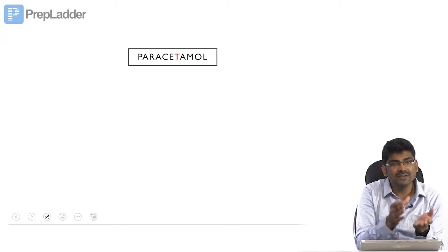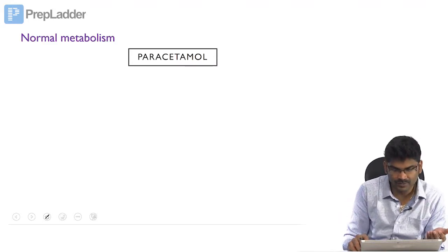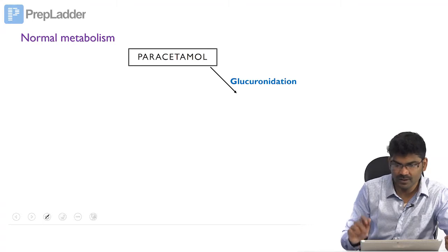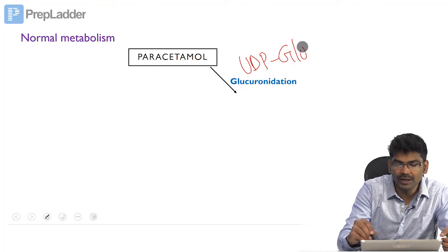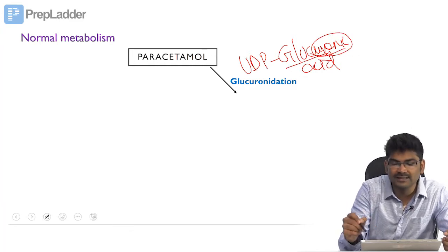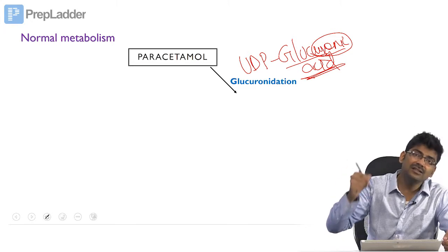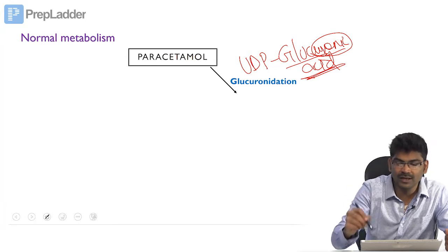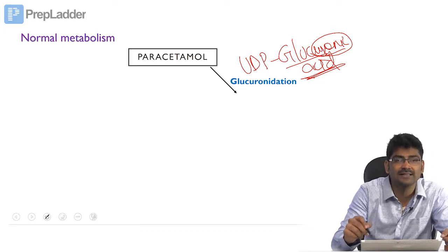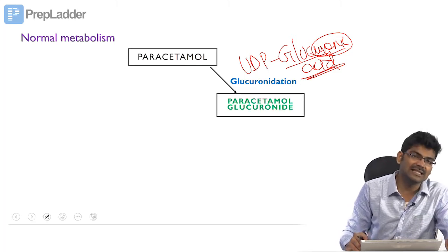Paracetamol already has a polar OH group, so it can directly undergo phase 2 conjugation. In normal metabolism, paracetamol directly undergoes glucuronidation — the addition of UDP glucuronic acid, which is a derivative of glucose. In UDP glucuronic acid, the aldehyde group is free. Glucuronic acid is polar, so paracetamol glucuronide can be easily excreted in the urine.